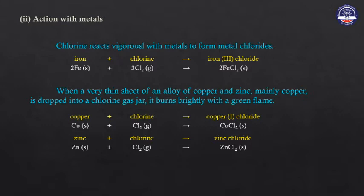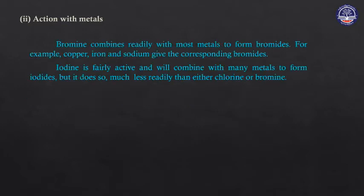Reactions with metals: using copper and zinc — copper forms copper chloride, zinc forms zinc chloride. Bromine reacts with metals including copper, iron, and others to form metal bromides. Chlorine is more reactive than bromine in these metal reactions.